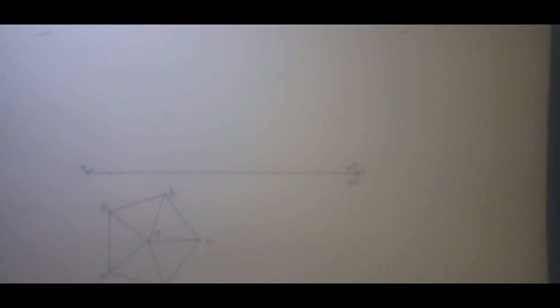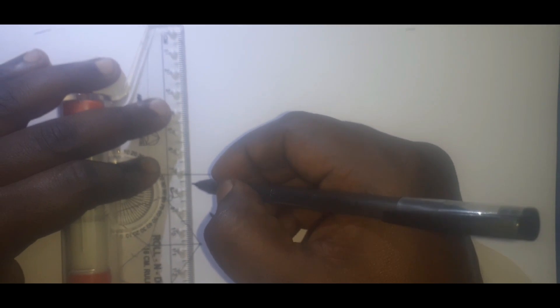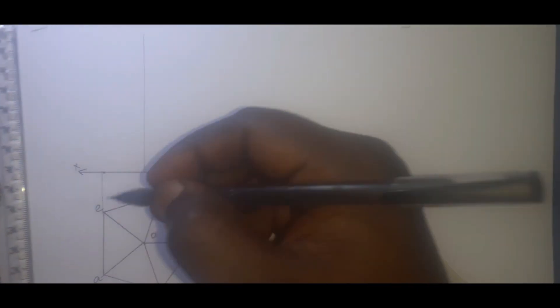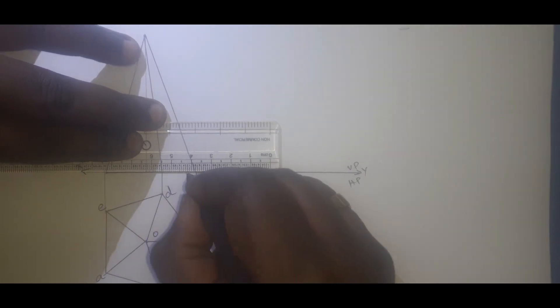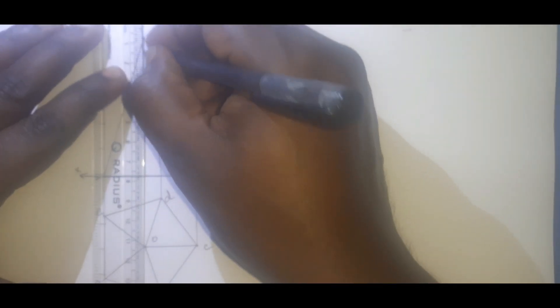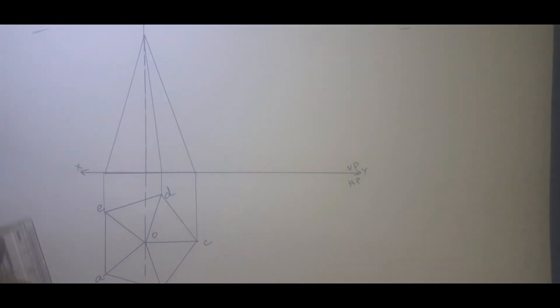Now I will be projecting all the lines. Here 70mm — I will draw the axis line for 70mm. Now I can join all the lines. This is for the bottom, and here this is the axis line. The axis line is normally drawn as long line, short line, short line, long line — like this the axis line has to be drawn.